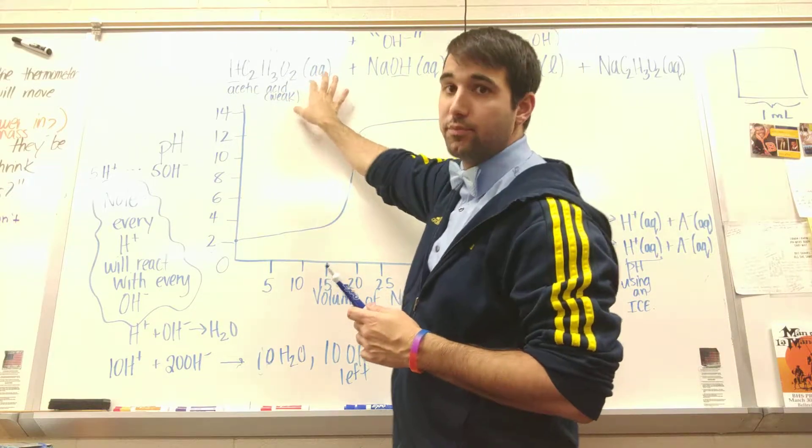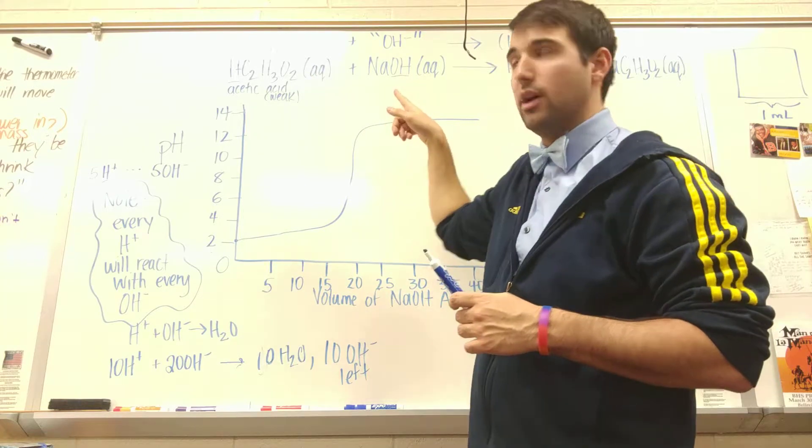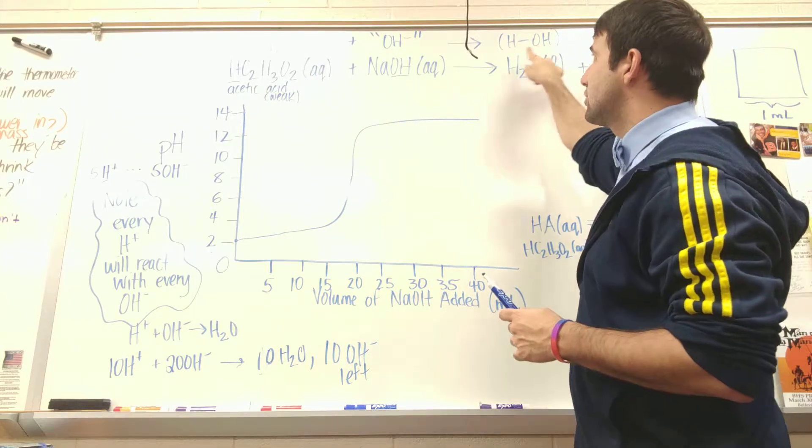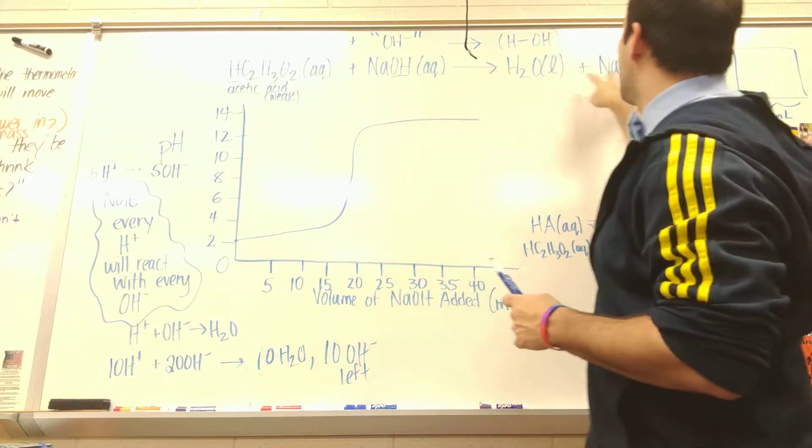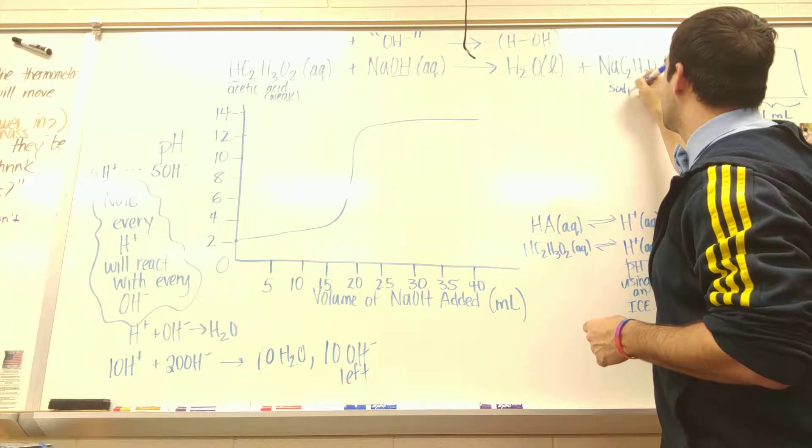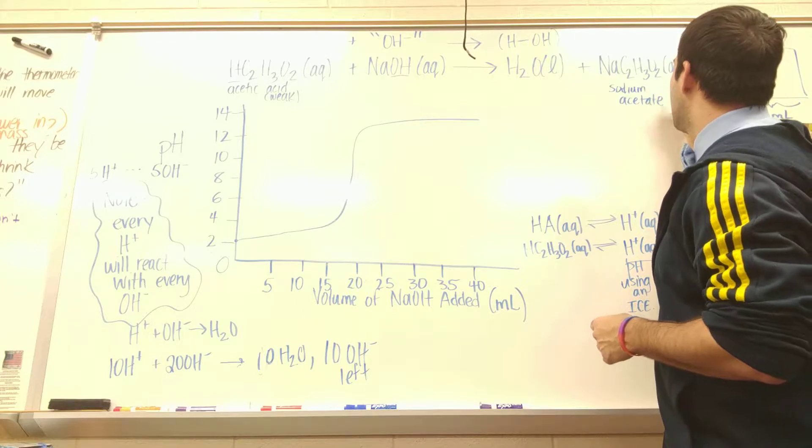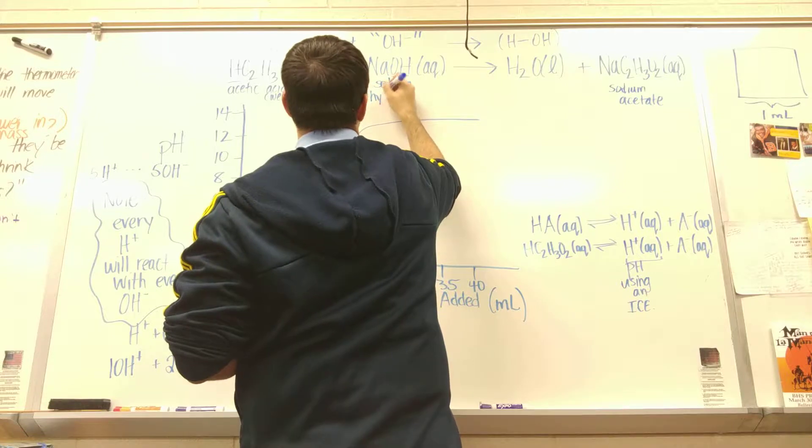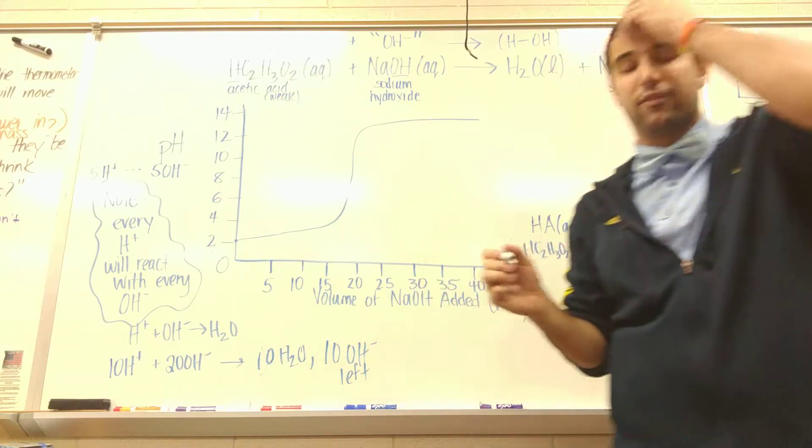So in our acid-base reaction, we have acetic acid reacting with sodium hydroxide in a one-to-one mole ratio. And I will get H2O, which is H and OH. The H comes from the acid. The OH comes from the base. And I'll get NaC2H3O2. This is sodium acetate. And this is sodium hydroxide.